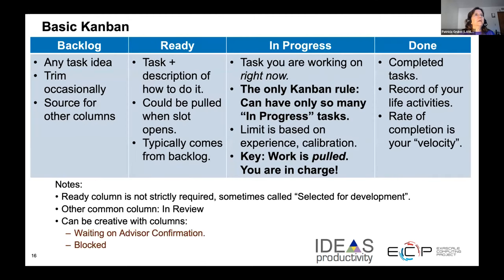Here is a basic Kanban board. Think of it as an organized to-do list with status, maybe divided or labeled by sub-projects. Every project has tasks that need to be done and are in various stages, shown in columns: items that are backlogged, those ready to develop, those in progress, and those completed. You may have other columns such as 'in review,' 'blocked,' or — if you're a student — 'waiting on advisor.' Design the Kanban however works well for you and your team.